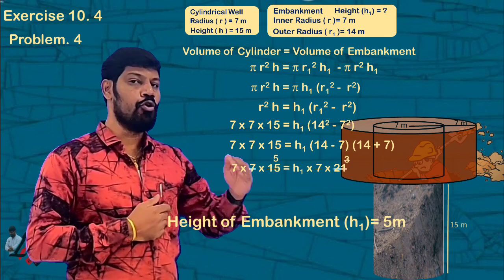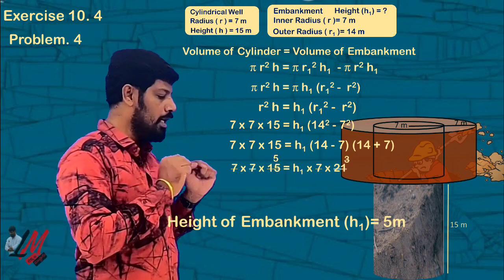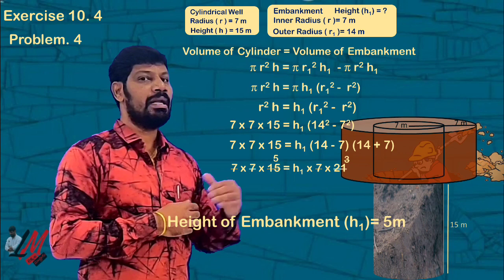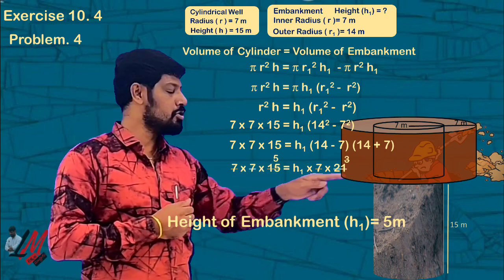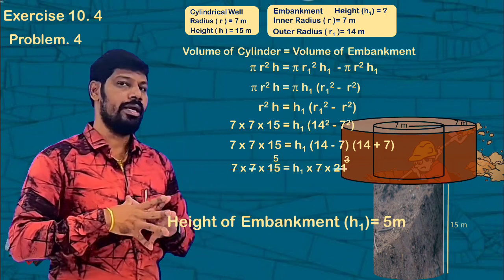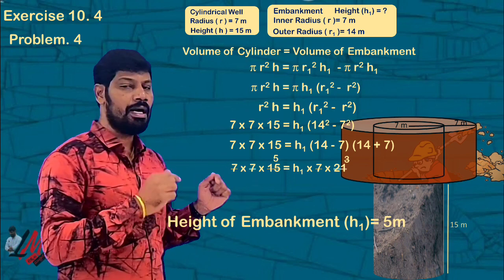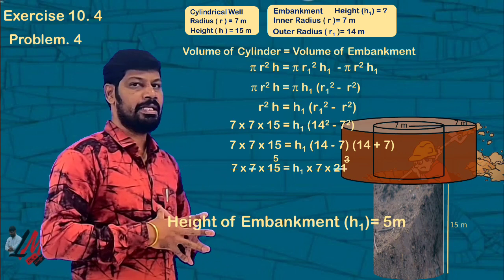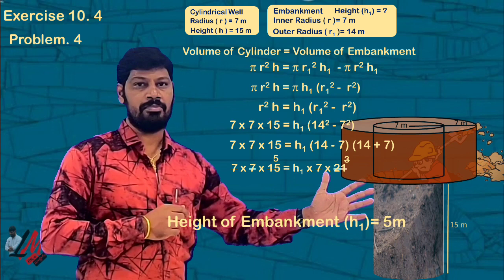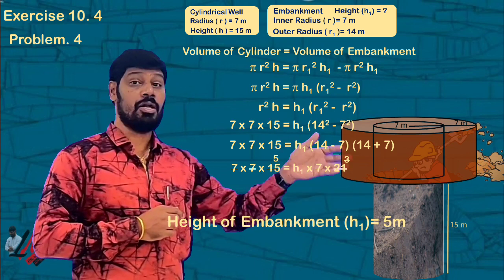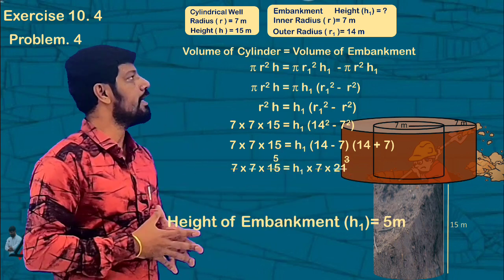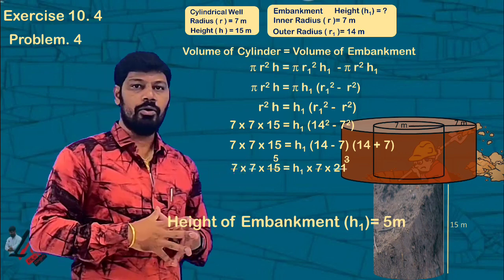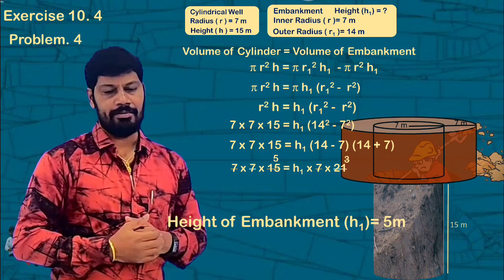My children, in this 4th exercise, this problem is a very important problem because it is very complicated to understand. When we look at these solids, the embankment is not a simple solid — it is a cylindrical pipe shape, so we need to be careful to calculate. I hope you understand the problem. We'll meet in the next video with another problem. Take care, bye-bye. See you later.